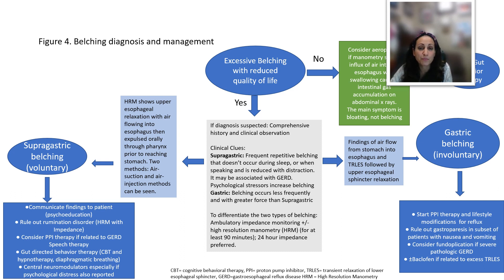In the first portion of the best practice advice, we discuss excessive belching, and we differentiate it into supragastric belching, which is completely voluntary, versus gastric belching, which is involuntary. We discuss how the two can be differentiated based on esophageal manometry and impedance pH testing. And then we also talk about aerophagia at the end.